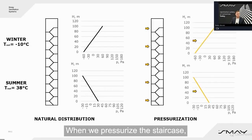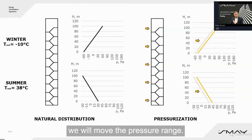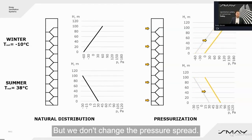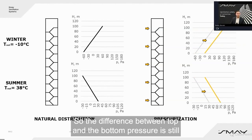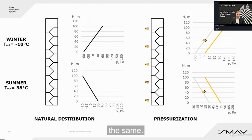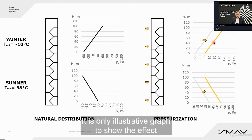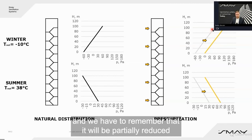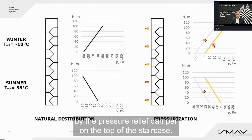When we pressurize the staircase, we will move the pressure range, but we don't change the pressure spread, so the difference between the top and bottom pressure is still the same. This is an illustrative graph showing the effect, and we have to remember that it will be partially reduced by the pressure relief damper on the top of the staircase.